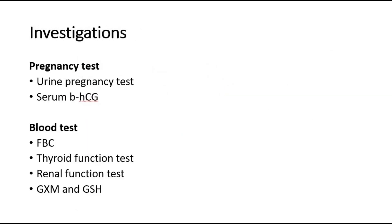The investigations that we can do: first to confirm the pregnancy, a pregnancy test which includes urine pregnancy test where it will be positive, and serum beta-HCG level — this is not only for diagnosis but also for prognosis later on. For blood tests, a full blood count to assess the hemoglobin level, and there might be anemia due to bleeding. Thyroid function test to assess the T4 and TSH levels to exclude hyperthyroidism, since there might be hyperthyroidism features.